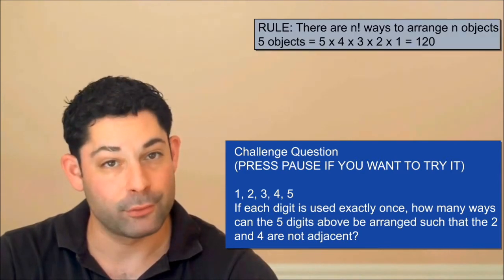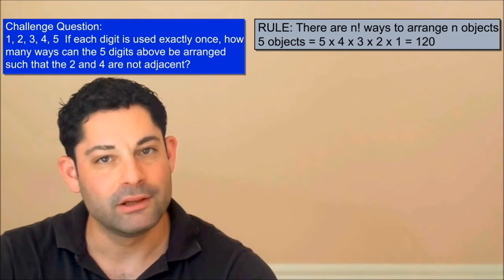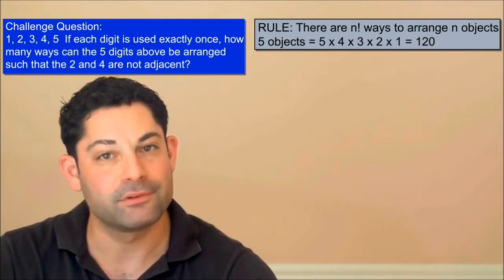There are n factorial ways to arrange n objects, so the first step to solving this problem is to determine how many digit arrangements are possible.